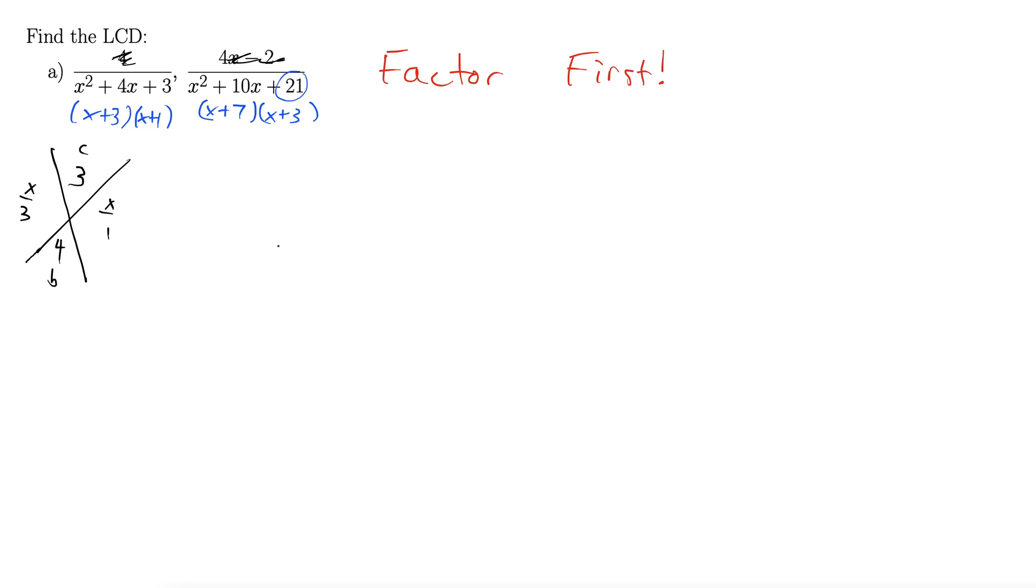Okay, now to find our LCD. LCD goes as follows. You write the first denominator as it is: x plus 3, x plus 1. And then you go to the second one and say, what do I have to add to our LCD to make sure I include everything in the second denominator? Well, we already have x plus 3. That's right there. But we don't have x plus 7 yet.